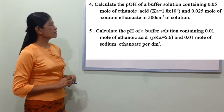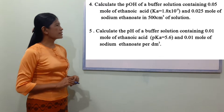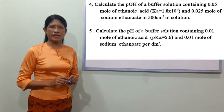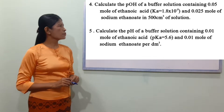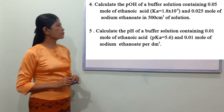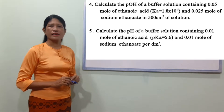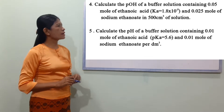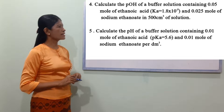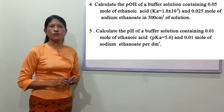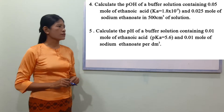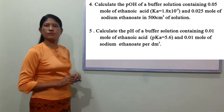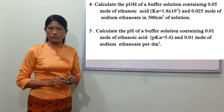Number 4: calculate the pOH of the buffer solution containing 0.05 mol of ethanoic acid, Ka is equal to 1.8 × 10 power minus 5, and 0.025 mol of sodium ethanoate in 500 cm³ of solution.